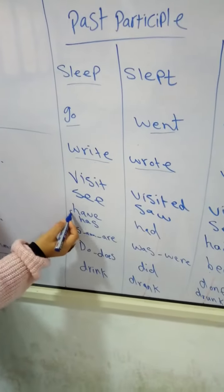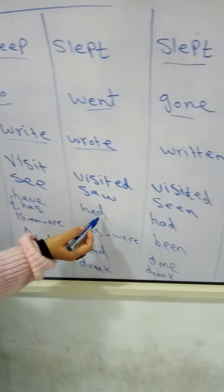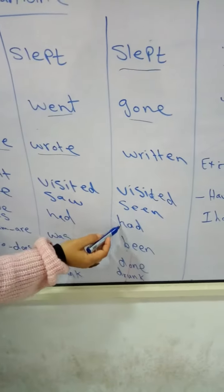Have or has? Have or has. The last sentence is had. Excellent. And had also.